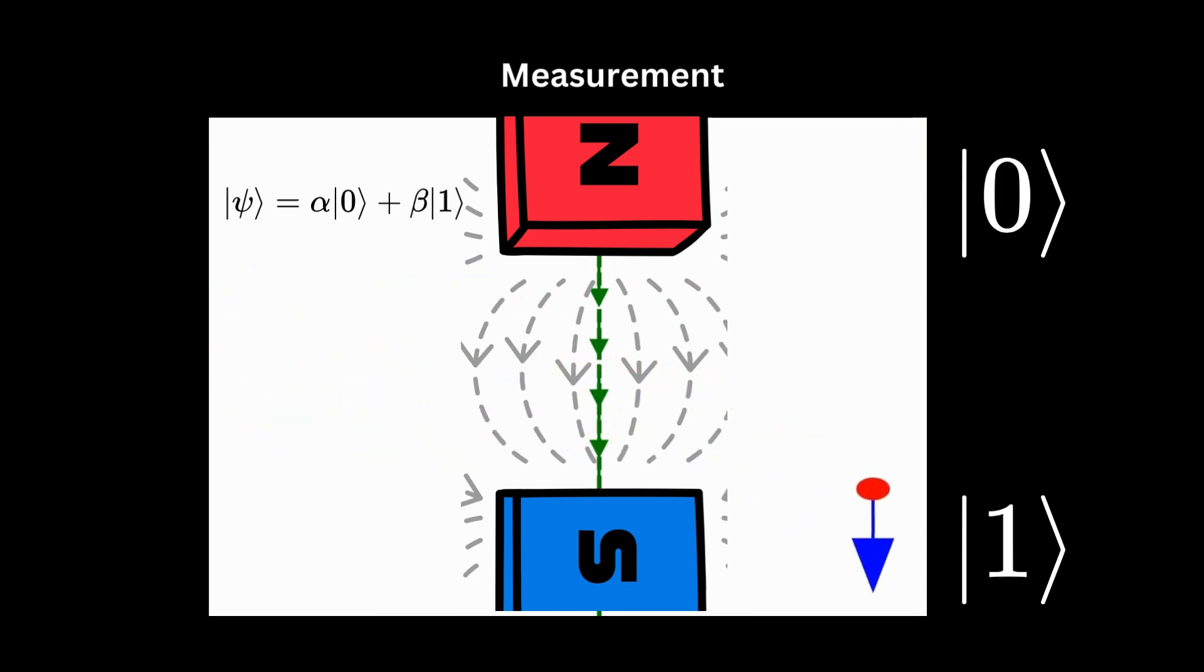When these neutral silver atoms traverse an inhomogeneous magnetic field, their spins become definitely oriented in a specific direction. This orientation of spin signifies the measurement process, where the spin of the electron is quantized into one of two possible states, up or down. The Stern-Gerlach experiment vividly illustrates how quantum measurement can collapse a superposition into a singular observable state.